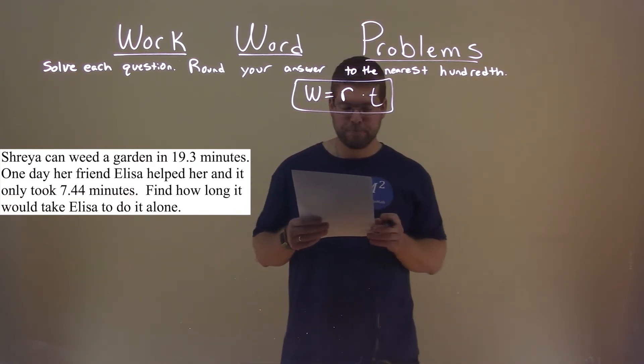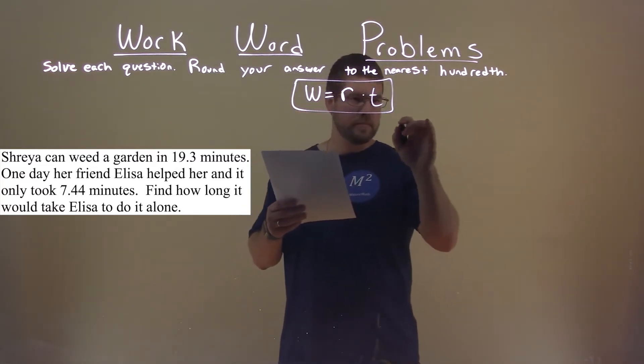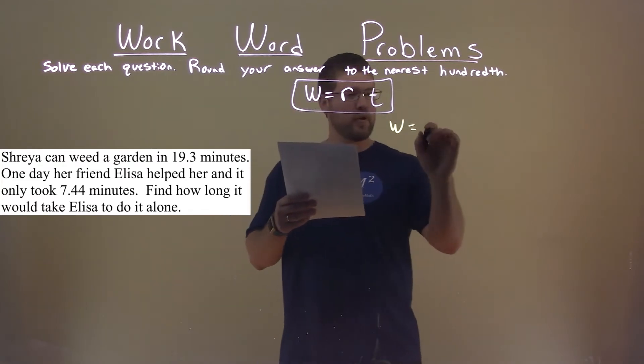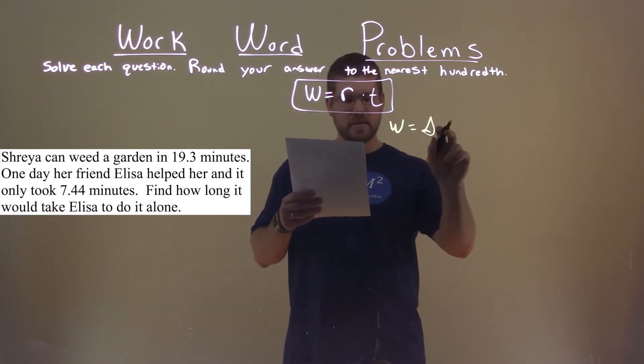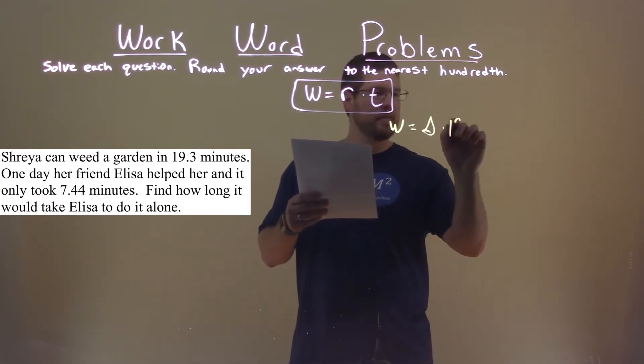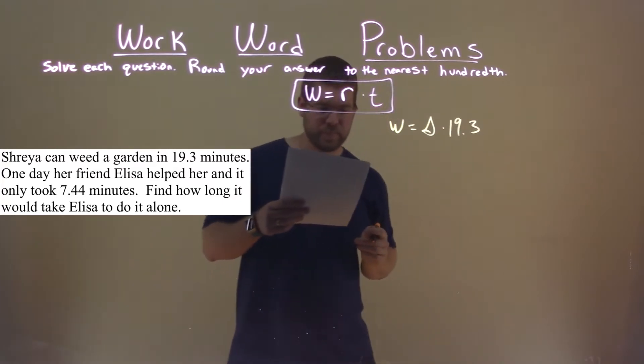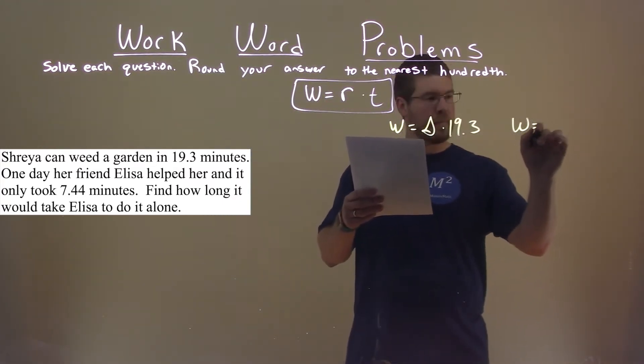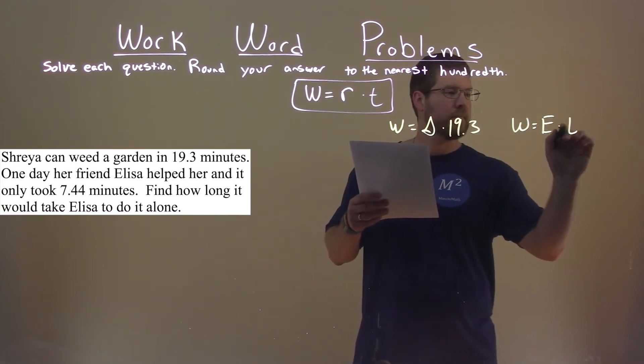Okay. Well, we know the work of weeding the garden, which will be W here, takes Shreya as her rate times 19.3 minutes. Eliza, we don't know, does the same work, Eliza's rate times time.